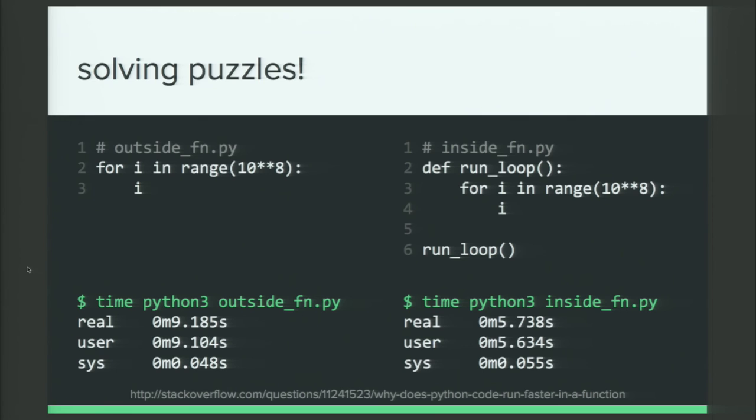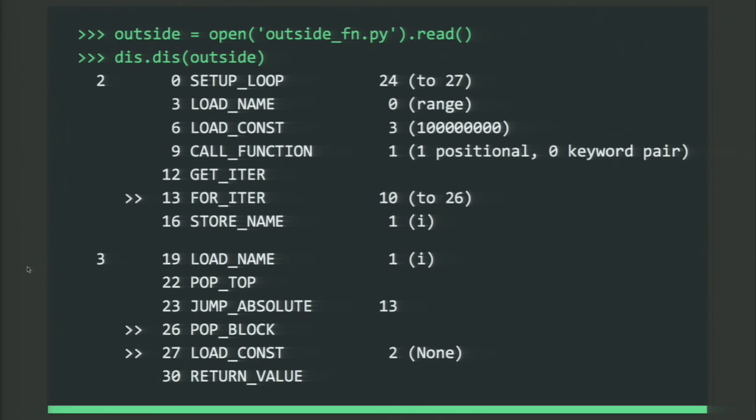Okay, so we have outside_fn.py. Now we know a few different ways of dissing a module. I'm going to choose the open.read method and get a string called outside, and then dis that. So this is now what Python sees when we run that outside_fn.py. Okay. I don't understand all of this. I don't necessarily need to. I can get a general sense of what's going on. We're loading this range function. We've got a really somewhat big number that we're loading in. Then we have this new thing. Get iter and for iter. For iter, that's our for loop there. So that's what that looks like to Python. Cool. And then inside of that, we're storing i, I guess, for each time we go through the for loop. And then we're loading i, because we had a really useful for loop in that code that we just saw. And okay. All right. Seems to make somewhat sense.